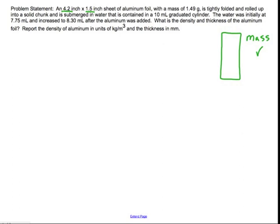We're also told that this is folded up and put inside of a 10 milliliter graduated cylinder. The water level starts at 7.75 milliliters and then goes up to 8.30 once the aluminum has been added. Hopefully you can recognize that this would be the displacement method for determining the volume of this aluminum.